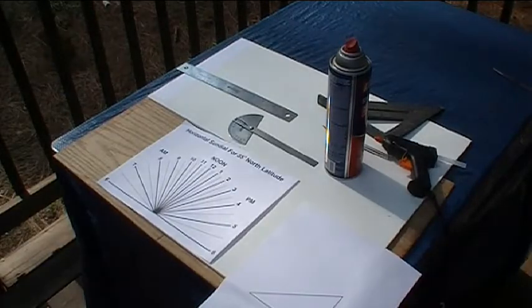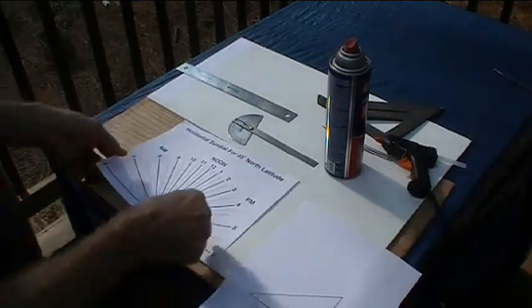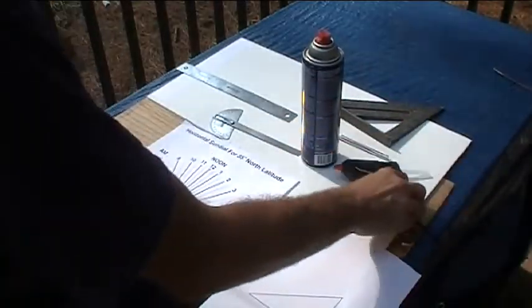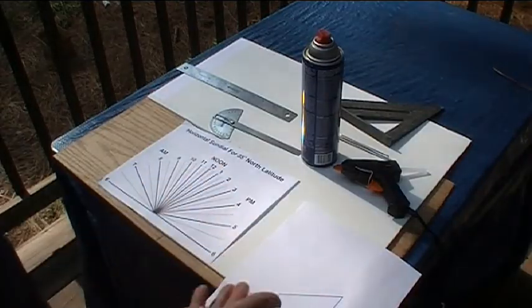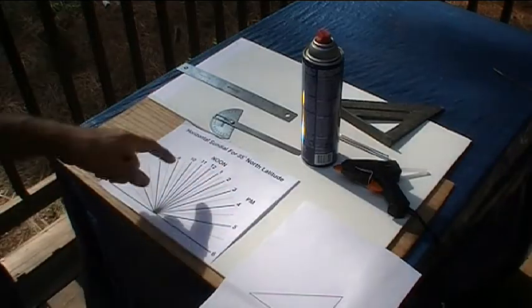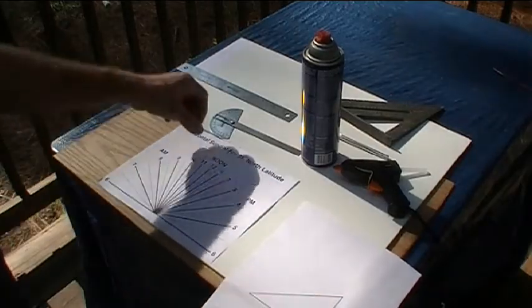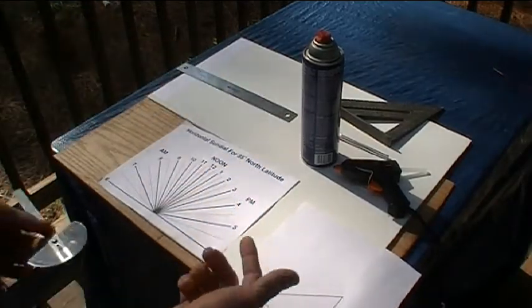Alright, we're out here on the back porch doing a little work outside because we've got the spray adhesive going. Makes it a little easier. Got my hot glue gun here. I've done a layout here for Southern Pines, North Carolina, which is 35 degrees north latitude. Here's the gnomon. It's at 35 degrees because that's the latitude.